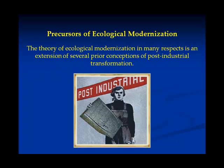The theory of ecological modernization, in many respects, is an extension of several prior conceptions of post-industrial transformation. In the following slides, I will point briefly to four prior theoretical perspectives that have informed the contemporary theory of ecological modernization in various ways. I'm going to talk here about four legendary figures: Walter Rostow, Simon Kuznets, Nikolai Kondratyev, and Joseph Schumpeter.